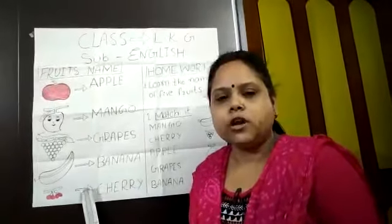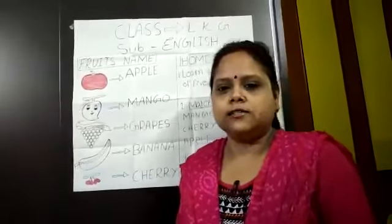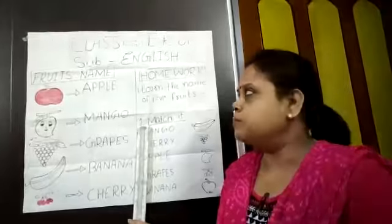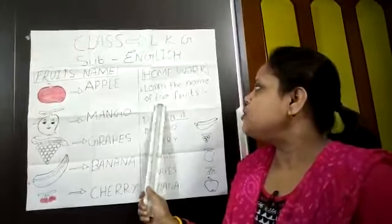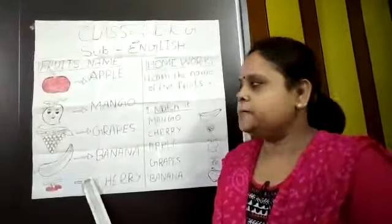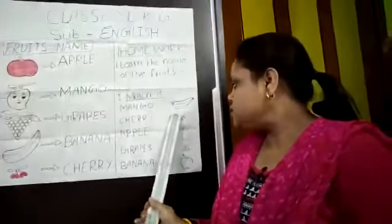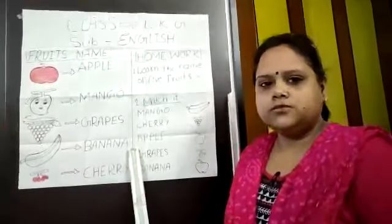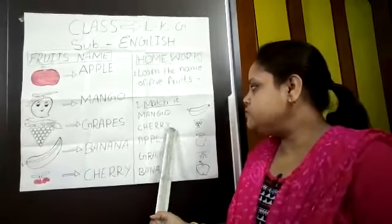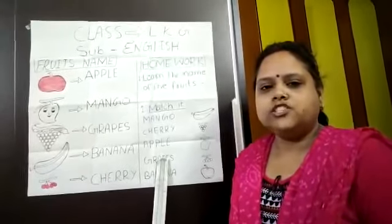This fruit names you have to learn. And here is some homework also for you. You have to complete this homework. First homework is: learn the names of five fruits. These five fruits you have to learn the name with spelling. And second homework is: Match it — match these fruit names with their correct fruit pictures. I will check in the next class.